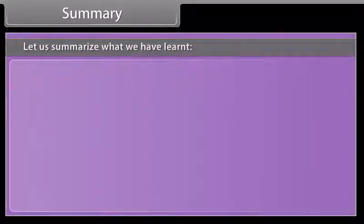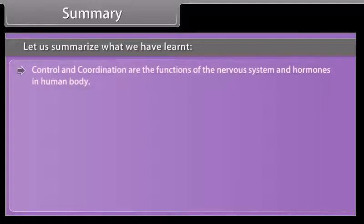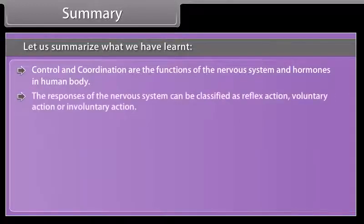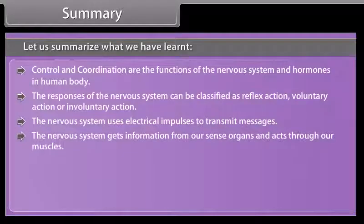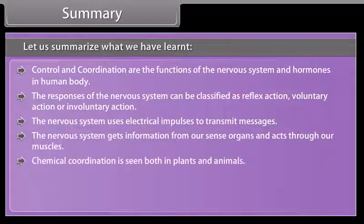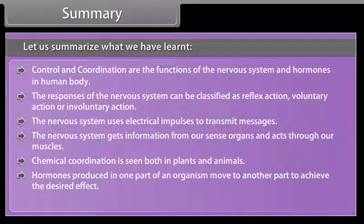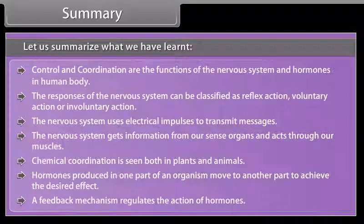Let us summarize what we have learned. Control and coordination are the functions of the nervous system and hormones in the human body. The responses of the nervous system can be classified as reflex action, voluntary action, or involuntary action. The nervous system uses electrical impulses to transmit messages and gets information from our sense organs, acting through our muscles. Chemical coordination is seen both in plants and animals. Hormones produced in one part of an organism move to another part to achieve the desired effect. A feedback mechanism regulates the action of hormones.